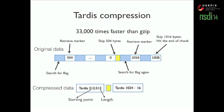In our experiment, TARDIS is about 33,000 times faster than GZIP when compressing one megabyte of data. Of course, this is not an apples-to-apples comparison since GZIP is a general-purpose algorithm, but it shows that by choosing our own data format appropriately, we can significantly reduce the overhead of compression.